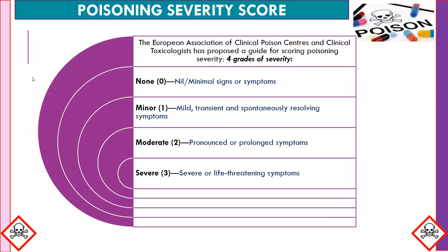The European Association of Clinical Poison Centers and Clinical Toxicologists has proposed a guide for scoring poisoning severity into four grades: 0 (nil) — no or minimal signs or symptoms; 1 (minor) — mild, transient, and spontaneously resolving symptoms; 2 (moderate) — pronounced or prolonged symptoms; 3 (severe) — severe or life-threatening symptoms.